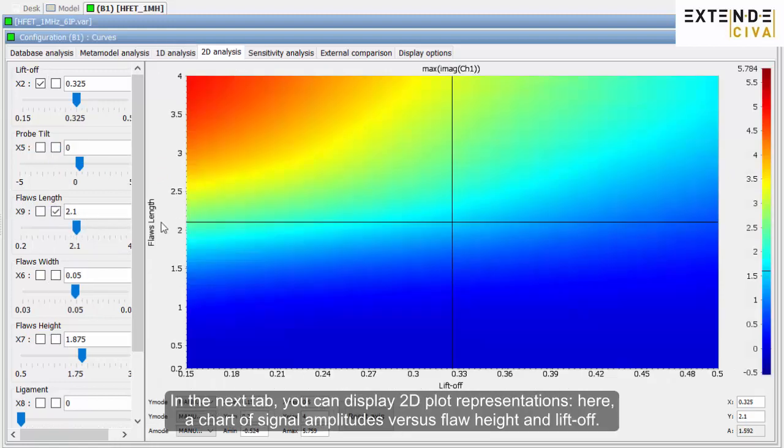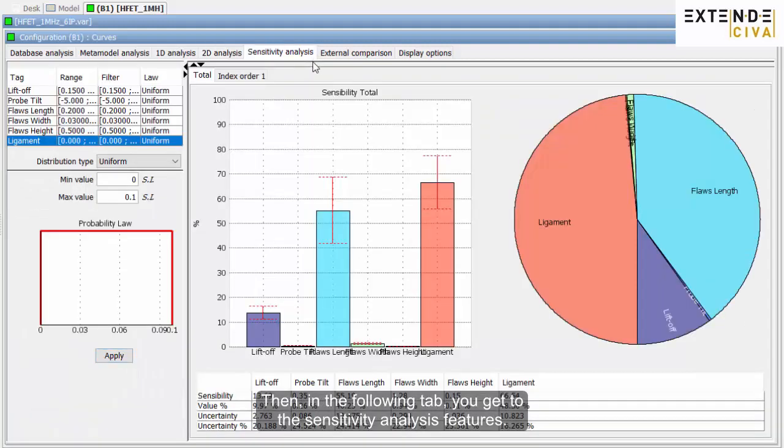In the next tab, you can display 2D plot representations, here, a chart of signal amplitudes versus flaw height and liftoff. Then, in the following tab, you get to the sensitivity analysis features.